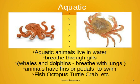Then we have aquatic animals — animals that live in water. They breathe through gills. Whales and dolphins are exceptions, breathing through lungs. Aquatic animals have fins or paddles to swim. Fish, octopus, turtle, and crab are examples.